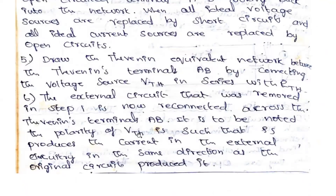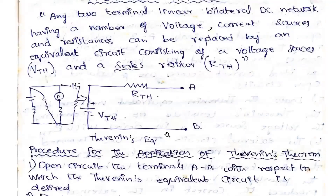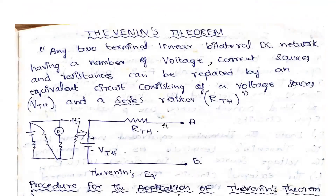It is noted that the polarity of VTH is such that it produces the current in the external circuit in the same direction as the original circuit produced. Whatever the polarity — say for example, if you are replacing the voltage source with the new VTH and the polarity is reversed, say minus and plus, you need to replace it with the correct polarity as given in the original circuit. These are the steps involved in calculating using Thevenin's theorem. You need to understand each step, then only you can solve the problem.